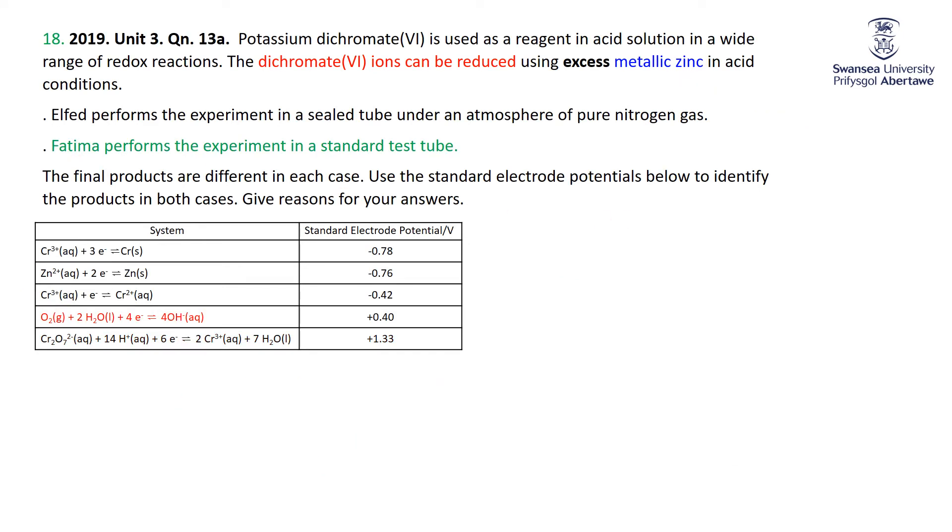But let's see what other bits of information we've got associated with Fatima. And the answer is she did it in a standard test tube and the standard test tube means there's oxygen present. Well, how does that help us here? Well, here's oxygen as a possible oxidizing agent, because of course oxygen is a very good oxidizing agent. Take oxygen with water quite happily goes reduced to four hydroxides with plus 0.4 volts. So we've got this potential for this reduction to go on.